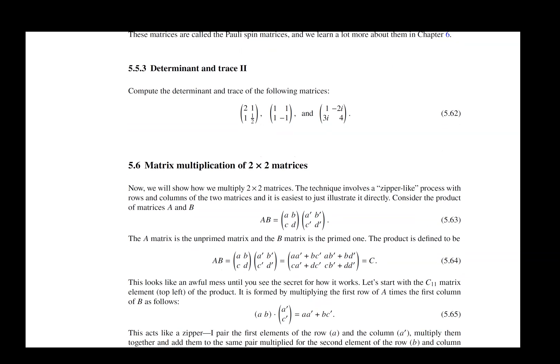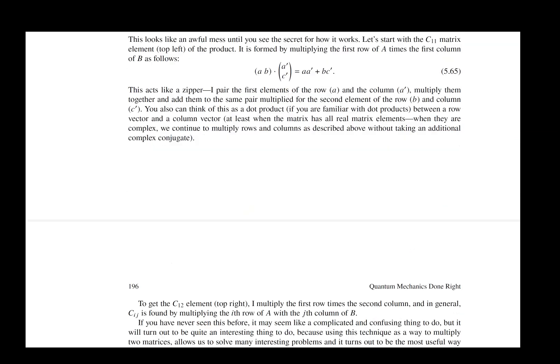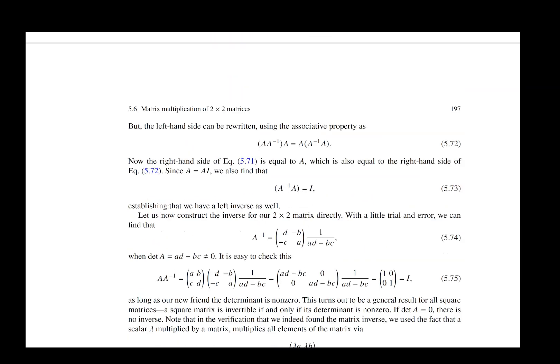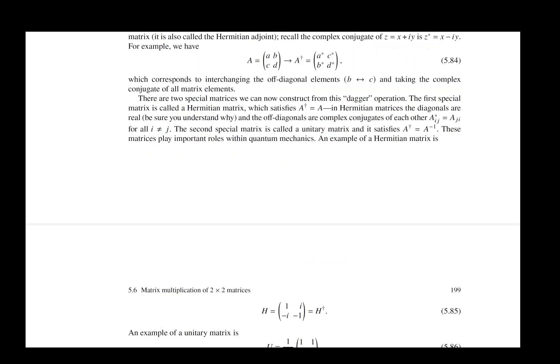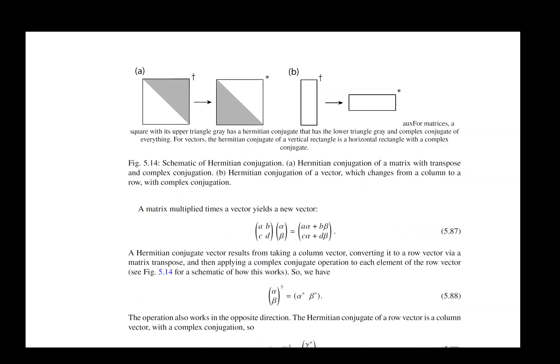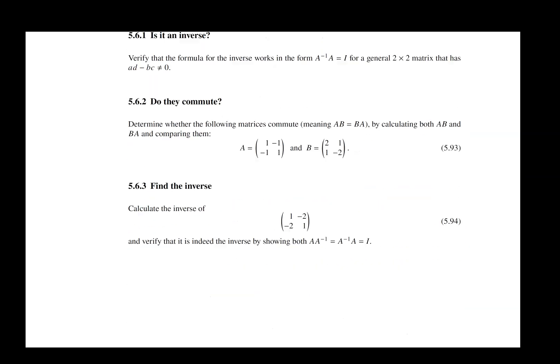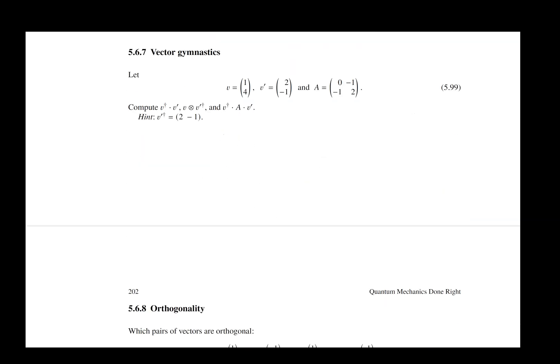Then we get into matrices. We talk about how you define matrices, how you can add them, how you multiply matrices together. And then we get into the eigenvalues and eigenvectors. We also talk about matrix operations such as Hermitian conjugate, which is a transpose followed by taking a complex conjugate.